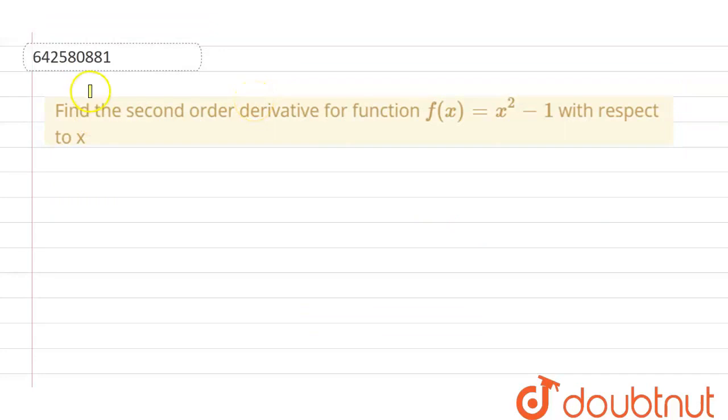So, let's start with this question. We have the question in which we have to find the second order derivative for the function f(x) equal to x square minus 1 with respect to x.